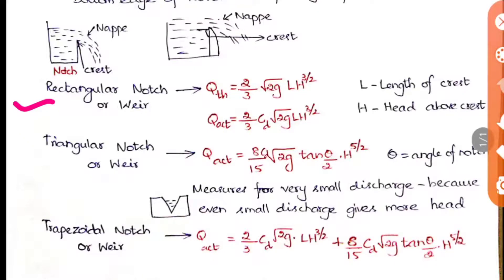The second is the triangular notch or triangular weir. The actual discharge is Q = (8/15) × Cd × √(2g) × tan(θ/2) × H^(5/2). Here tan(θ/2) is an extra term and we have H to the power 5/2. Theta is the angle of the triangle provided in the notch, as you can see in the diagram of the triangular notch. Triangular notches are preferably used for calculating smaller discharge.